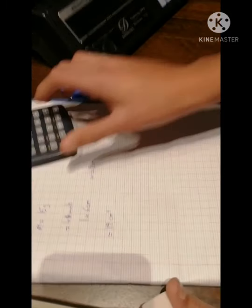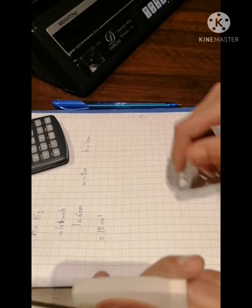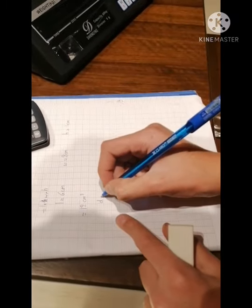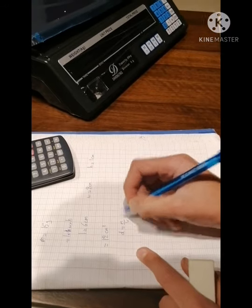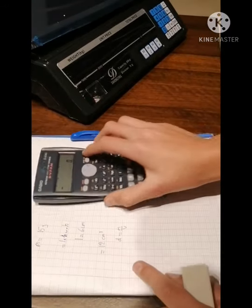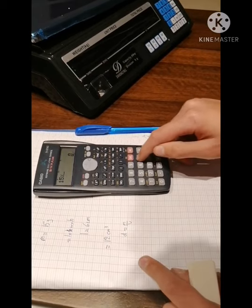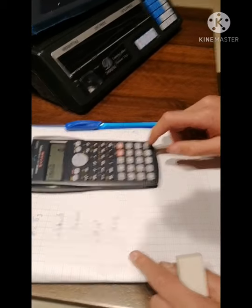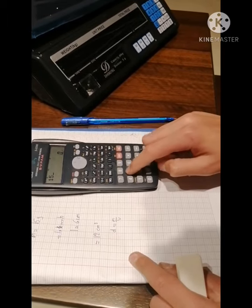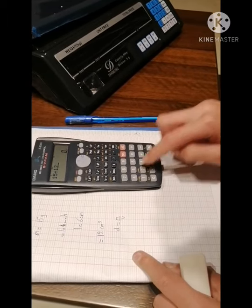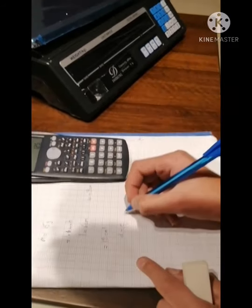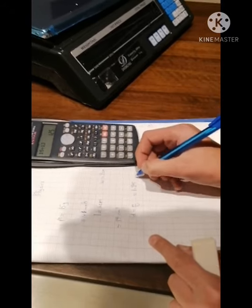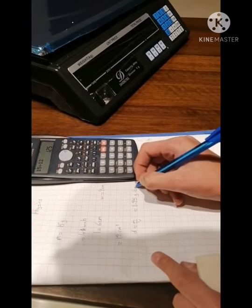Now, I will calculate the density of this body. Density equals mass over volume. Mass equals 15 g, and volume equals 12 cm cubed.